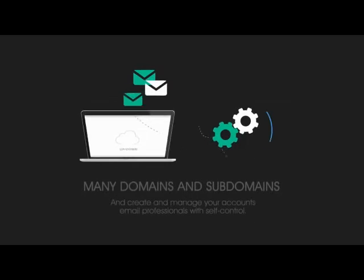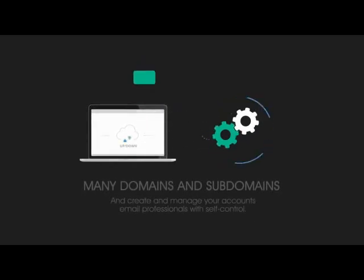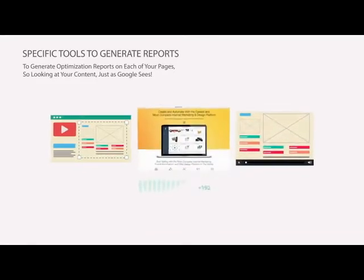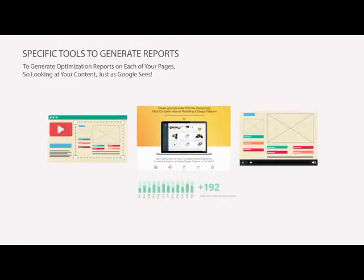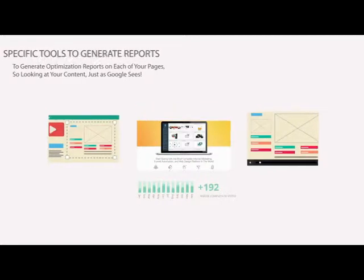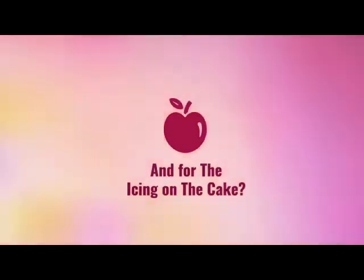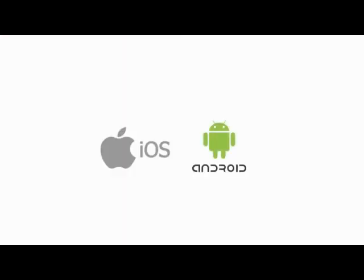Our complete system allows you to host unlimited domains and subdomains, as well as create and manage unique email accounts right from a responsive virtual office. And if you really want to strive for perfection and obtain that perfectly optimized page, you need specific optimization tools that make your page attractive for search engines to index — that's what you want Google to see. For the icing on the cake, you can use a quick and efficient tool for creating amazing iOS and Android apps, so you can literally be at your client's fingertips 24 hours a day.